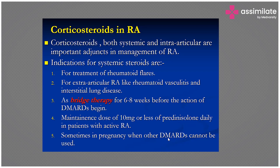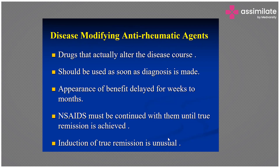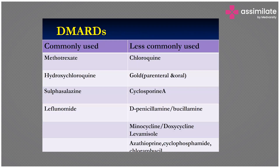Corticosteroids are also used in pregnancy when other DMARDs cannot be used. DMARDs are disease-modifying agents that actually alter the disease course and should be started as soon as the diagnosis is made. The appearance of benefit is delayed for weeks to months. Commonly used DMARDs include methotrexate, hydroxychloroquine, sulfasalazine, and leflunomide.